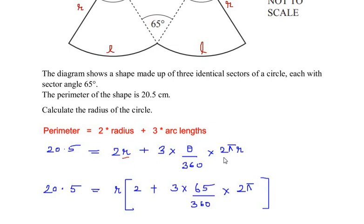Since r is a common term, I have taken it outside and factorized it. Inside the bracket remains two plus three times theta. Theta was the central angle and it was given as 65 degrees.